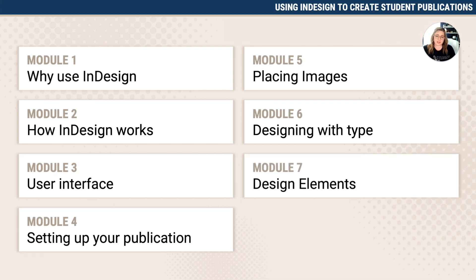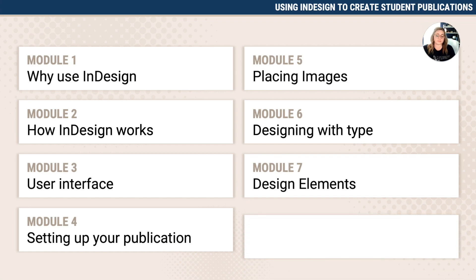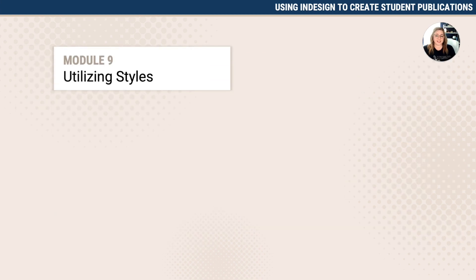Then we have design elements — and notice content comes first, design second, because that is how your students should be designing their layouts as well. Module 8 is alignment tools. I'm a sucker for alignment — we'll talk about grids, guides, and snapping to the grid to make sure everything is perfectly aligned. Module 9 is utilizing styles, one of the best features in InDesign — you can create styles for your text and objects to ensure consistency throughout the whole publication, so students don't have to individually change fonts, sizes, strokes, or drop shadows. We also cover utilizing Creative Cloud Libraries, where you can create entire modules that drag and drop into your spread.